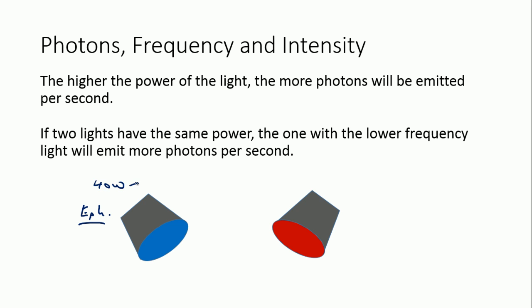So if we then increase the power of the light, we make it brighter, increase the intensity. Let's say we double that to 80 watts. The individual photon energy will not change, and therefore twice the number of photons are going to be emitted from the lamp every second. So if you increase the power or the intensity of the light, then you will increase the number of photons being emitted per second. But you won't change the energy of each individual one, because you haven't changed the frequency. And the energy is proportional to the frequency.